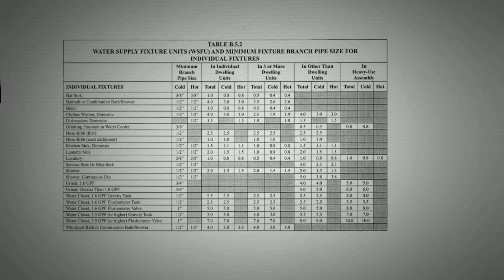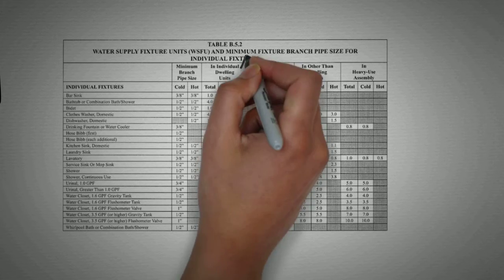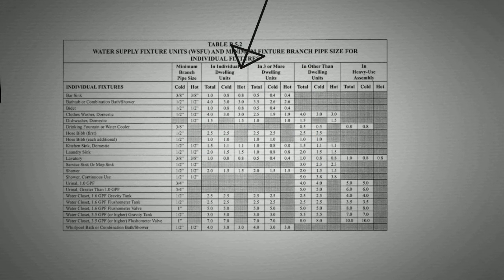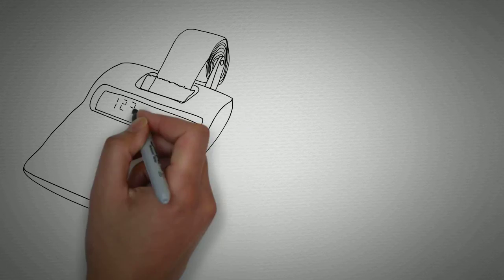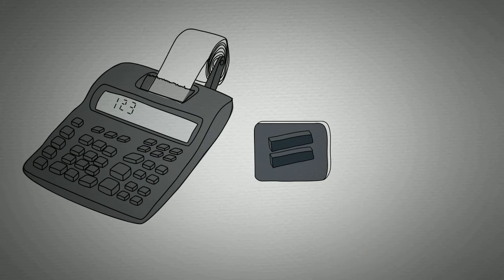So you would look at the individual dwelling units column and record the corresponding value. The WSFU values for these fixtures added up comes out to 14.5, and rounding up, we get 15.